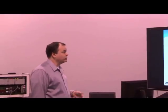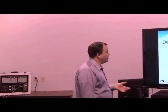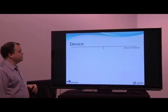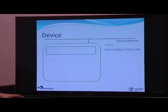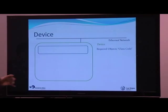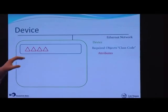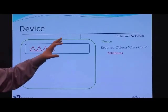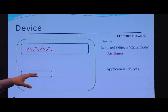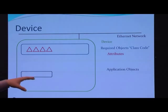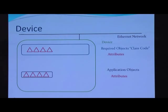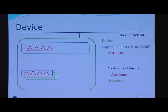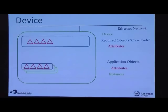To illustrate this graphically: our device is connected to the Ethernet network. Ethernet IP sets up a set of required objects with a class code, and inside those objects are attributes that help define it and put it on the network for communication. Inside the device we also have application objects, which also have attributes — and those attributes are usually where your process data lives. You can have different instances of that process data.